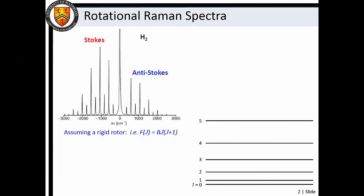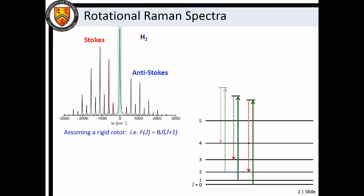Rotational Raman transitions arise from inelastic light scattering processes, wherein the molecule changes rotational state but not vibrational state. During the scattering process, we find that the total angular momentum quantum number can change by plus 2 units, leading to a series of lines to slightly lower wavenumber of the Rayleigh-scattered laser line.